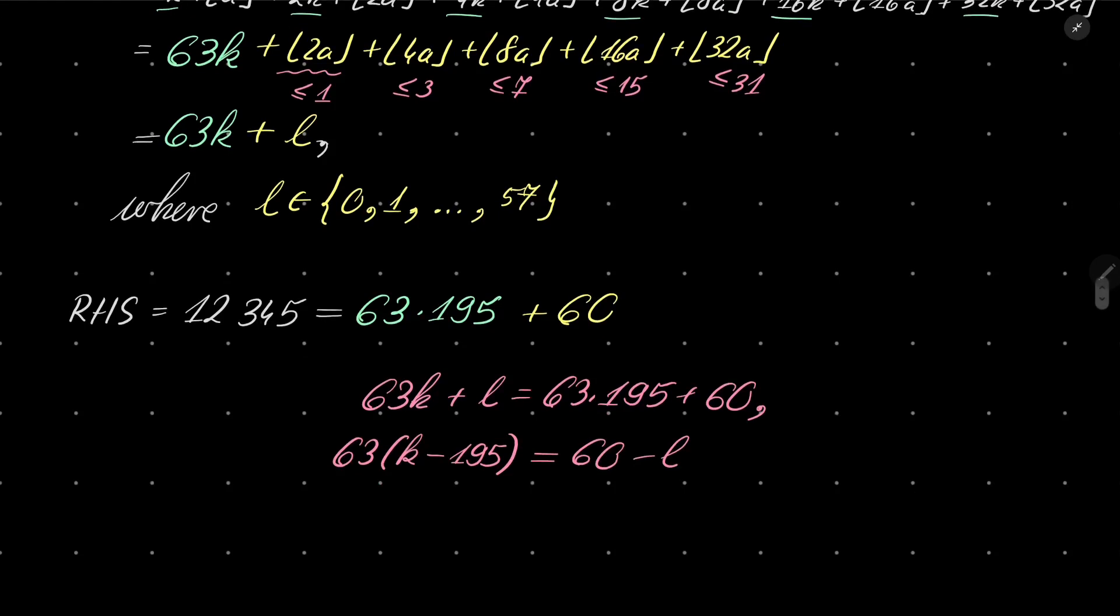Now we have a problem, because the left-hand side is definitely divisible by 63, but the right-hand side cannot be. Why? Because it's 60 minus some integer between 0 and 57, so it's definitely not divisible.